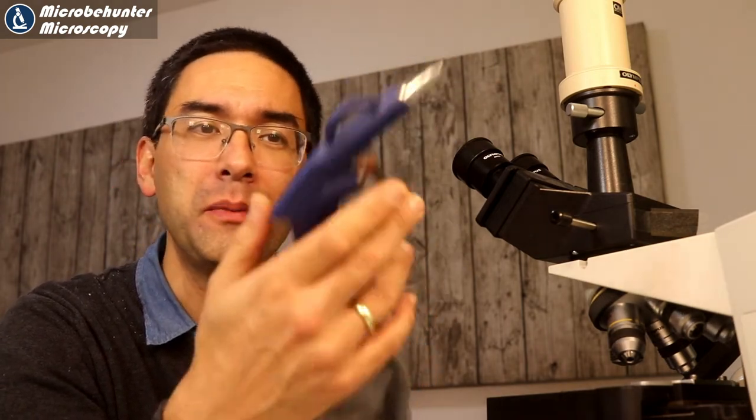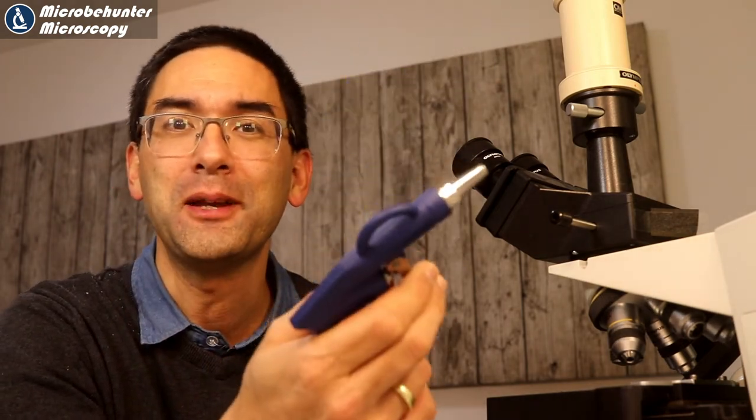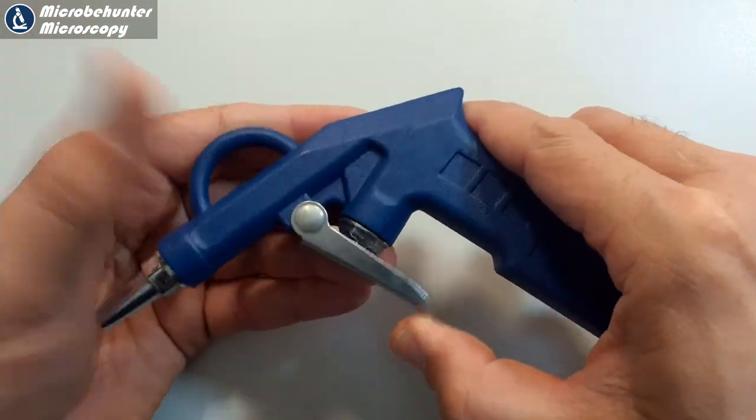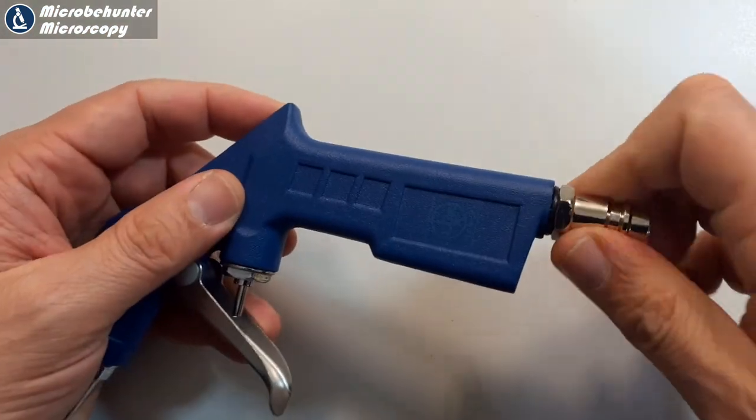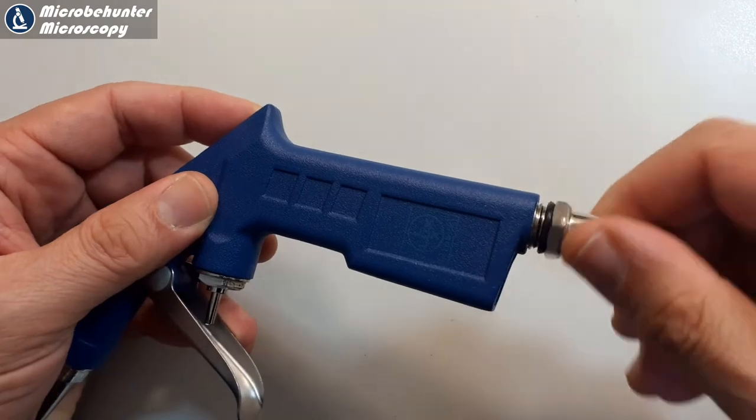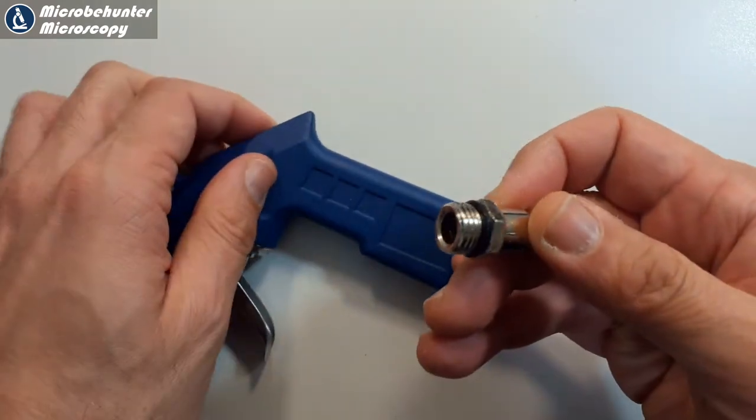And I'm simply going to show you now how I made this. It's actually quite simple to make. The biggest challenge, of course, was to get an airtight connection between the air blowgun and the plastic bottle.